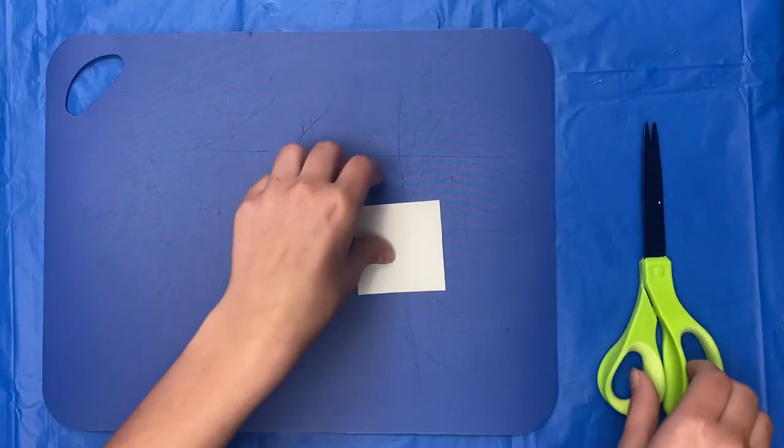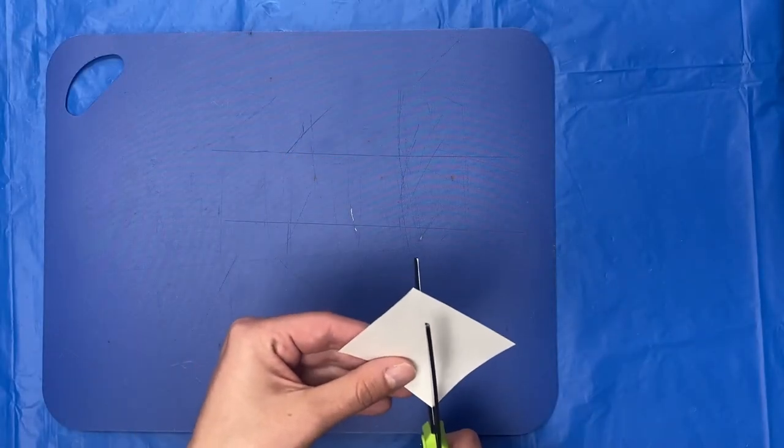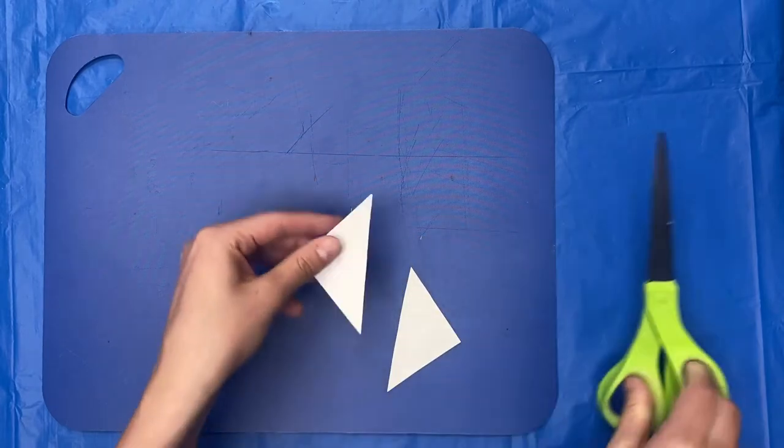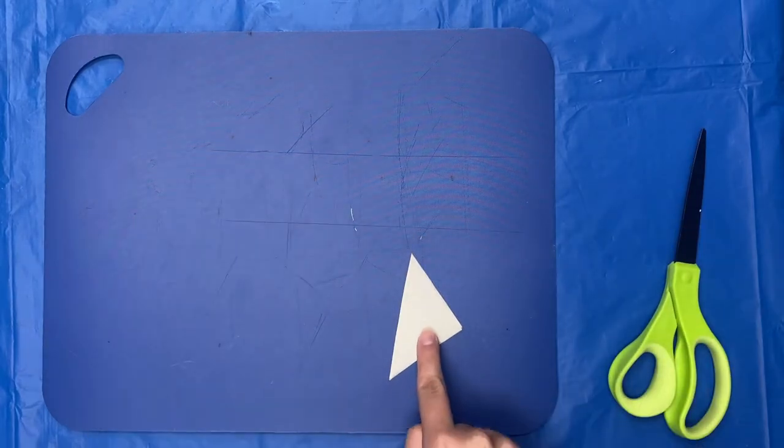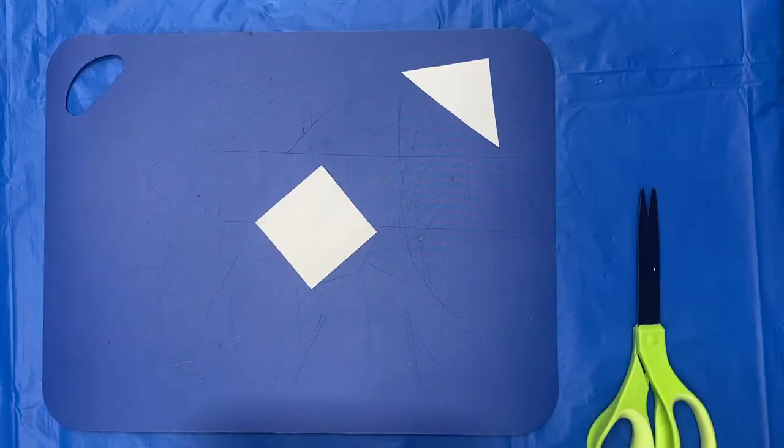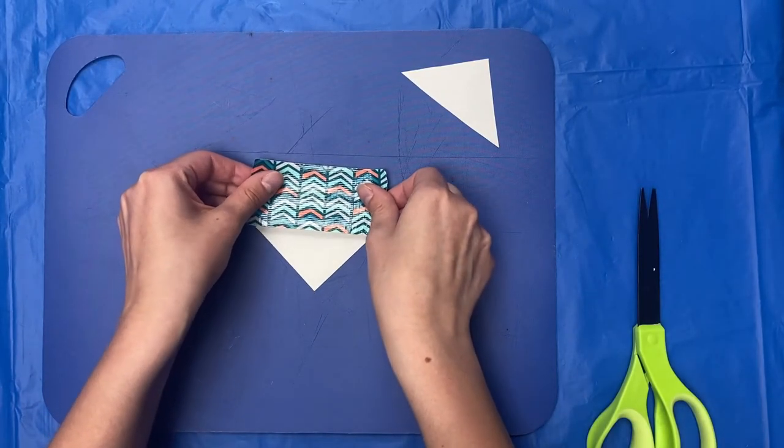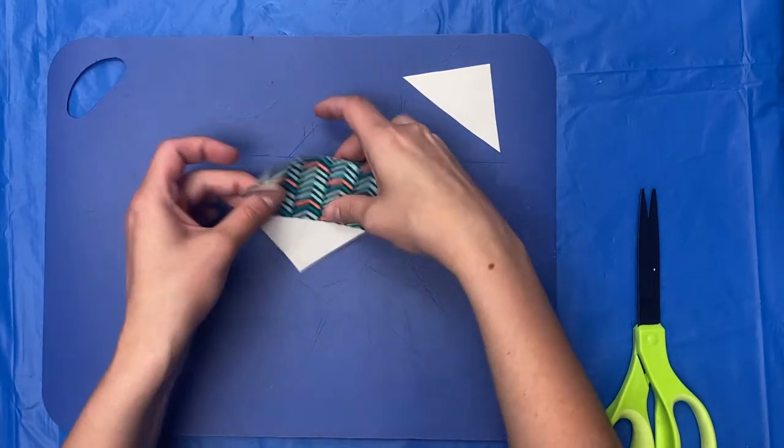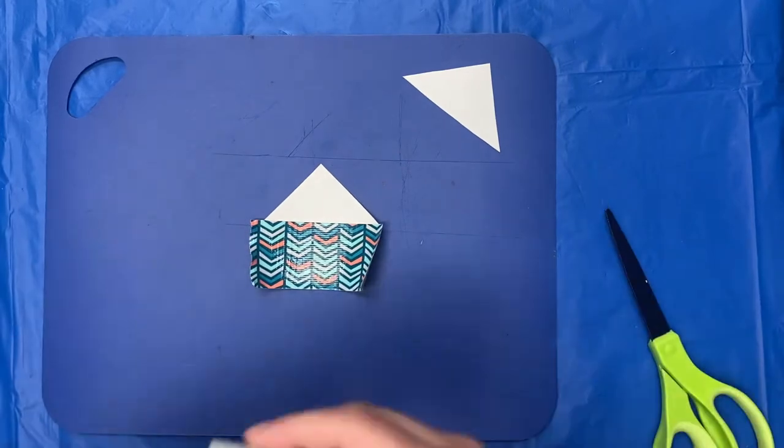Take one of your squares and cut it in half diagonally. Keep one half. Cut a piece of duct tape and lay it diagonally across the square piece. Do the same with the other half.